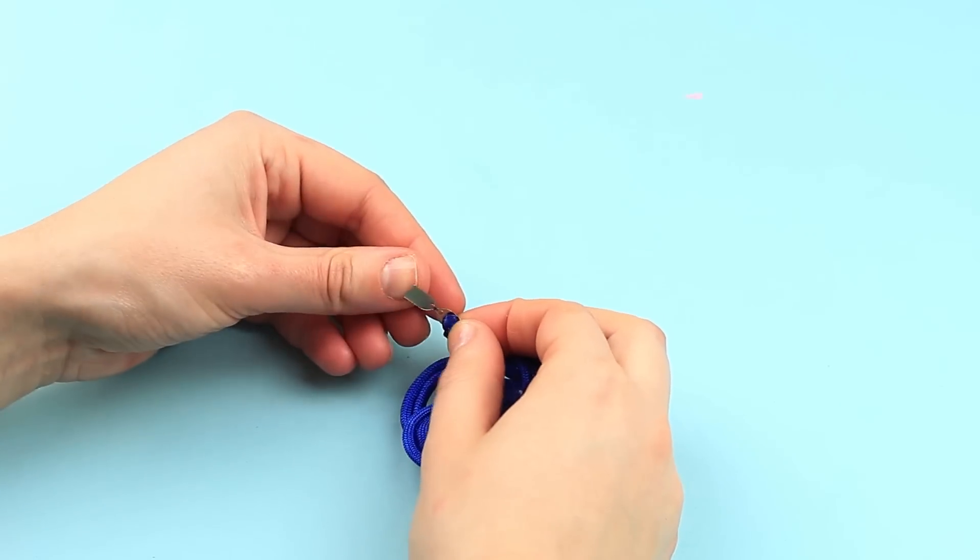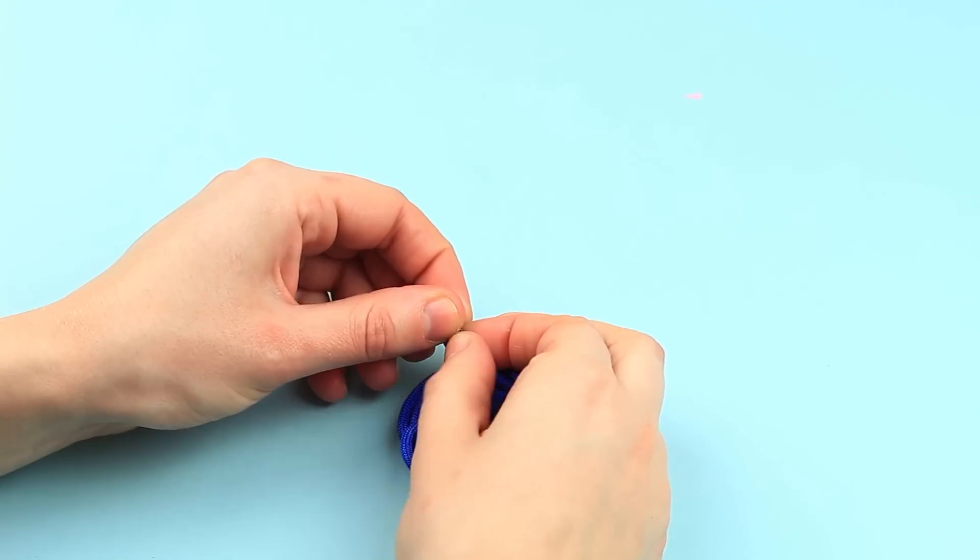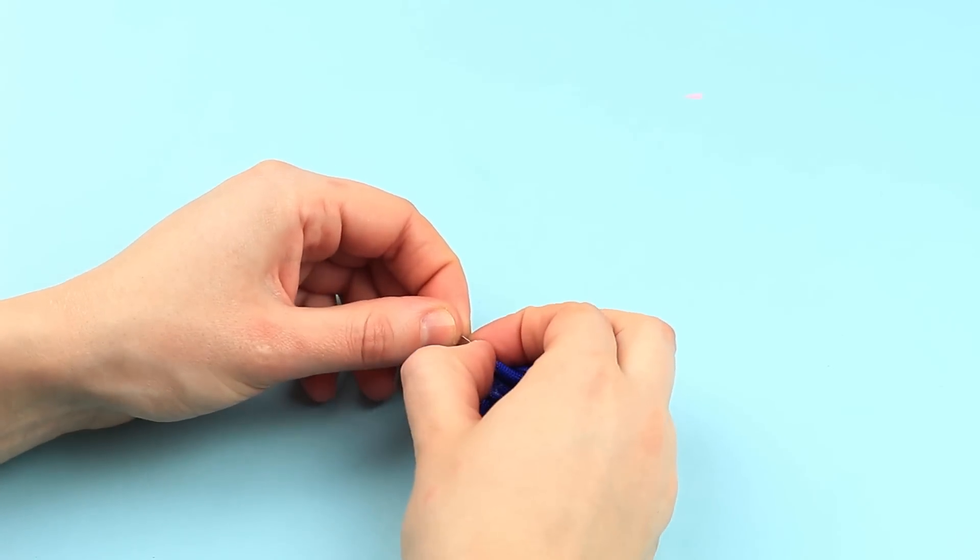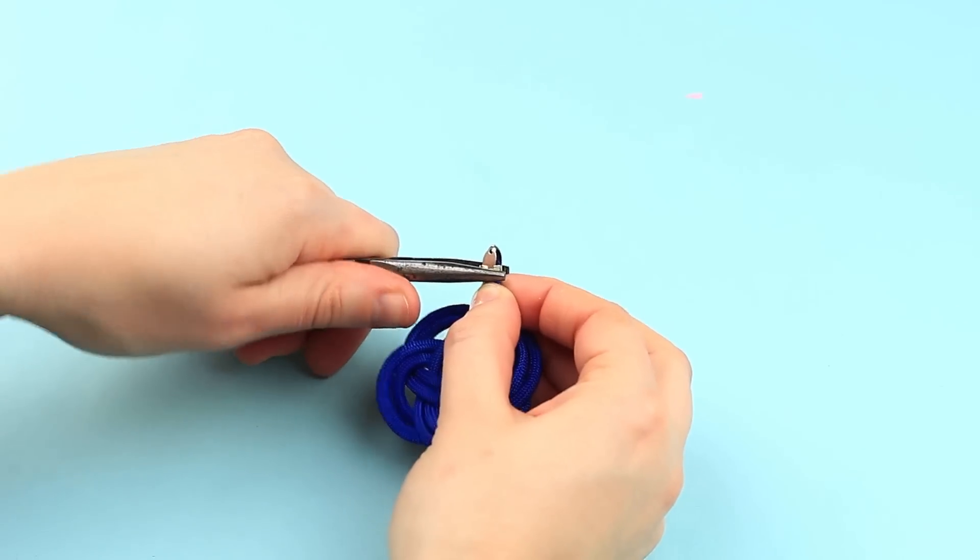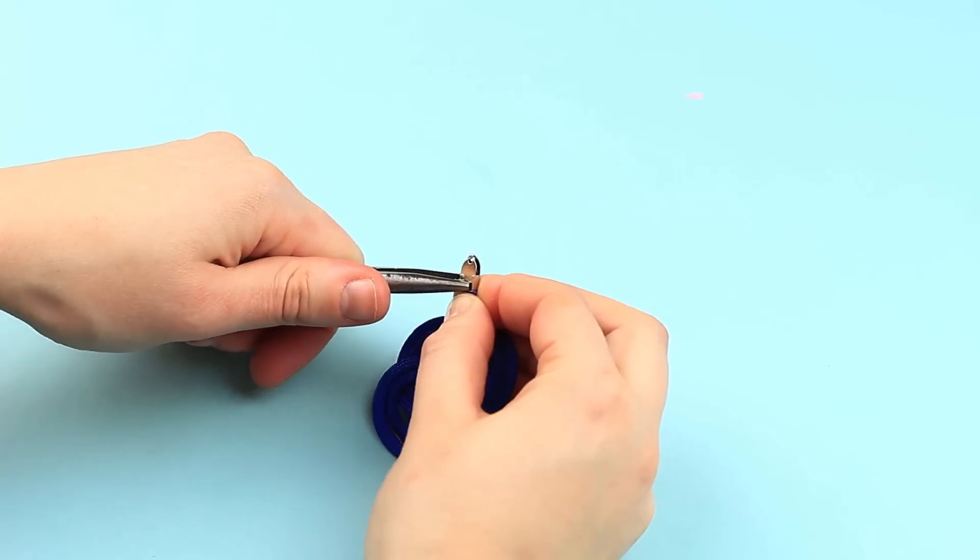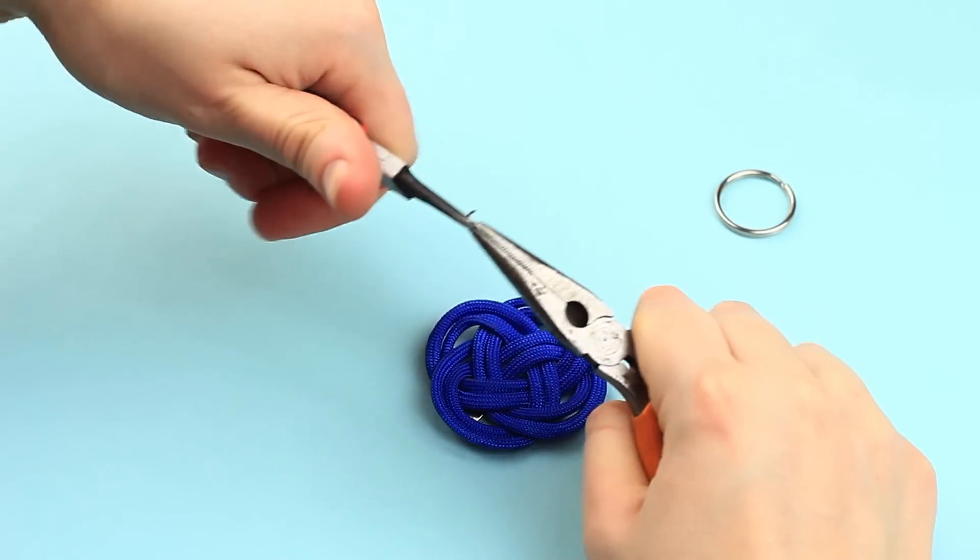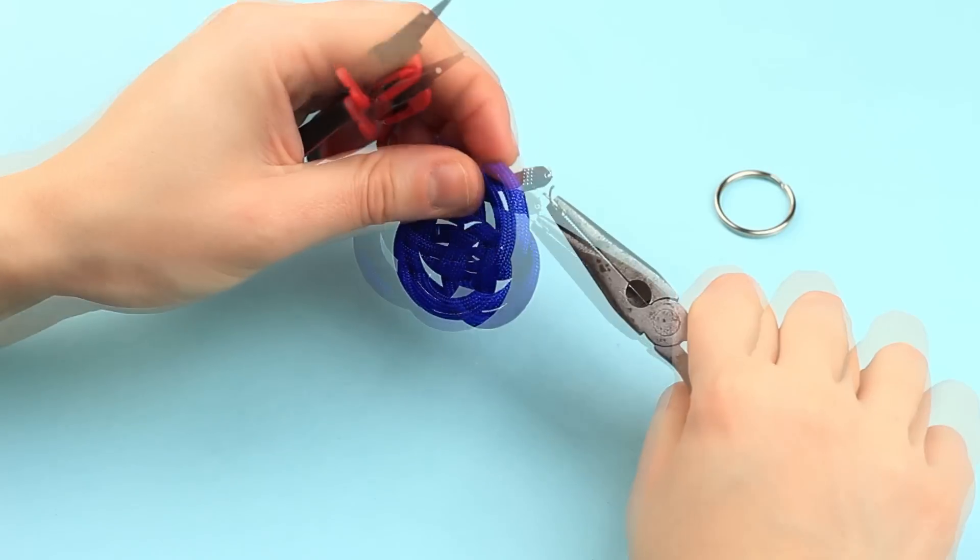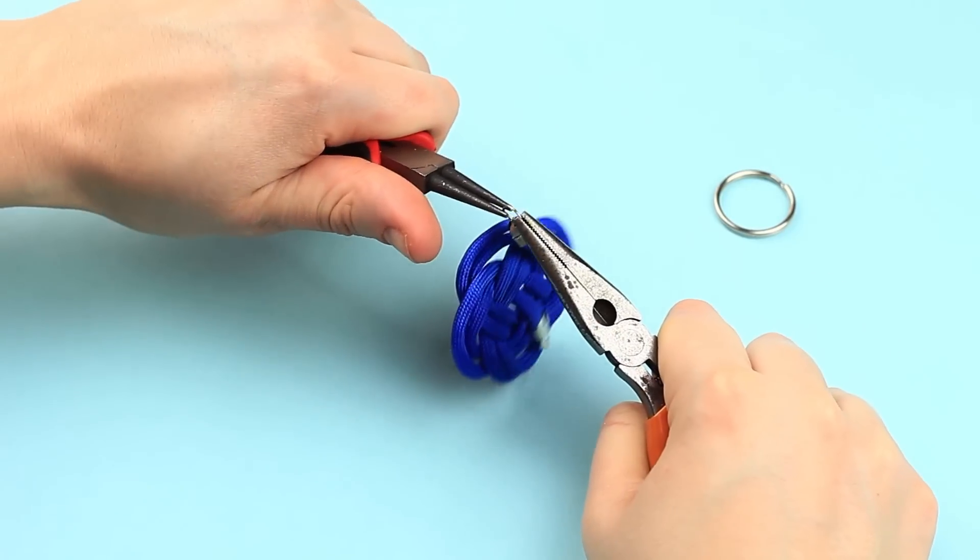When the knot is dry, put crimp head clasps on the cord ends. Close the clasp with round nose pliers. Open a jump ring to thread a clasp. Close the ring.